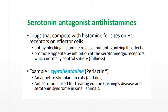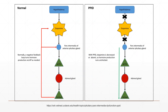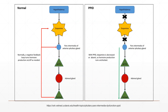Cyproheptadine is also used for treating equine Cushing's disease and serotonin syndrome in small animals. The patients that respond to cyproheptadine in equine are older equids with equine Cushing's or PPID — pituitary pars intermedia dysfunction.